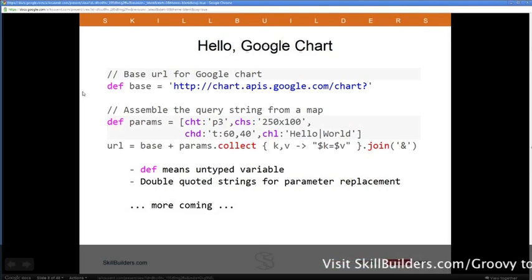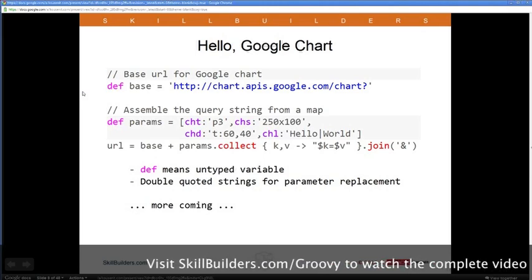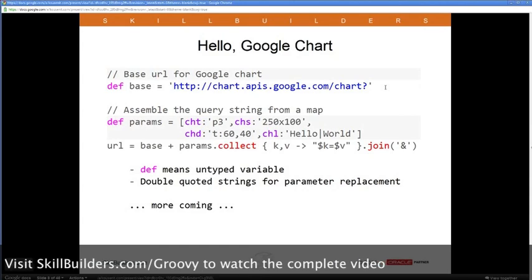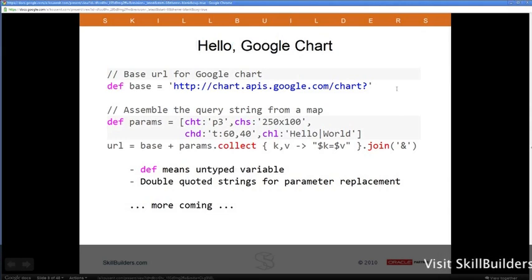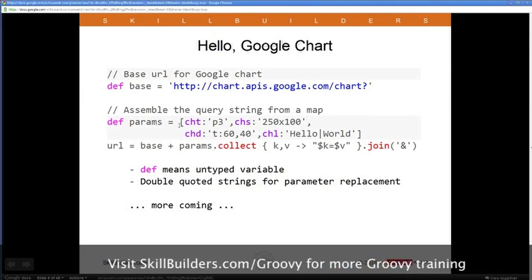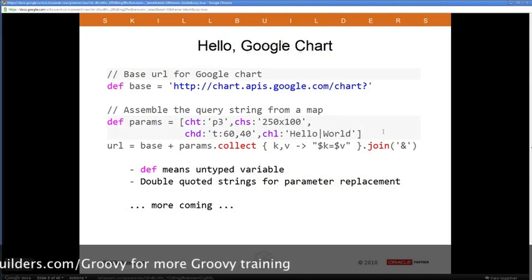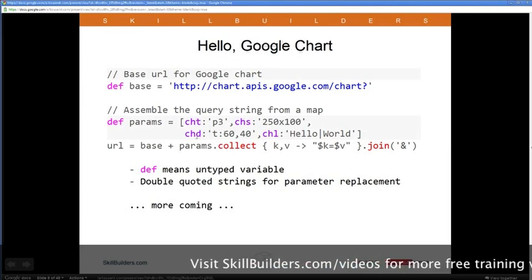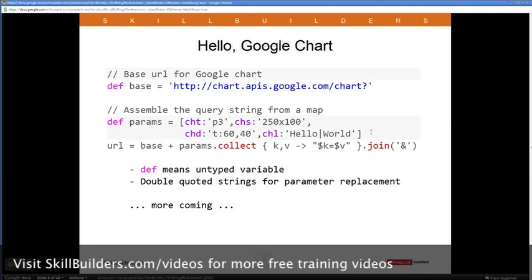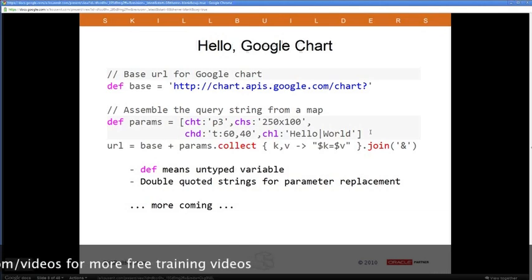If I say string base, that's fine too, but you can start with def if you're not sure. I've put the Google Chart URL inside single quotes as a string. Then I define params as a map — in Java you'd have to instantiate a HashMap and call put for each key-value pair, but in Groovy you just write out the map literal with keys CHT, CHS, CHD, and CHL and their corresponding values from the Hello World URL example.